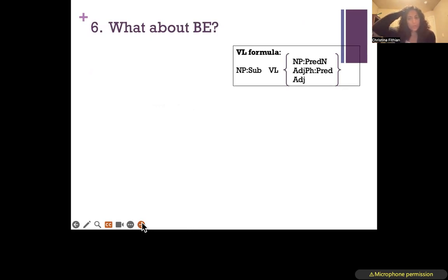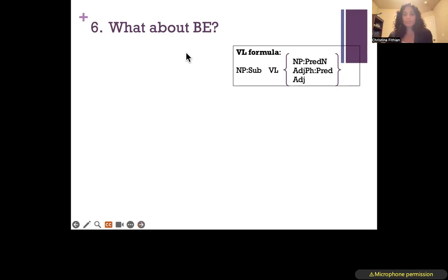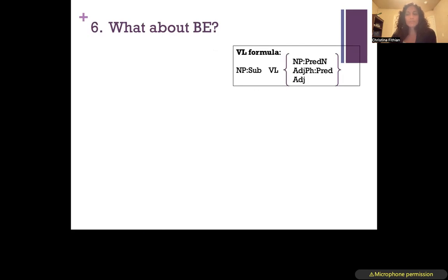Now, what about be? A lot of grammar books will put be in as a linking verb because it does pattern similarly to linking verbs in some ways. However, we are going to consider be a distinct category all on its own, and we're going to label it in our tree as BE — capital B, capital E. While be may be similar to VLs in a lot of ways, it also behaves very differently, so it kind of has to be its own category.